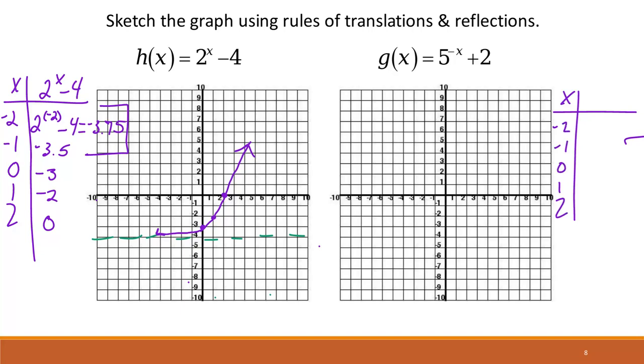And then we can substitute into 5 to the negative x plus 2 here. And so if I did 5 to the negative of negative 2 plus 2 as my first function. Let's see what we would get here. We would get 27.